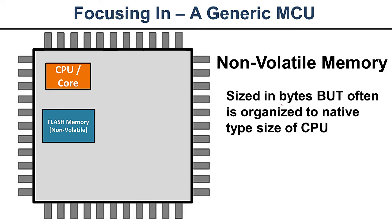When you look at microcontroller specs, flash is sized in 8-bit bytes, but internally it's organized to the native type size of the CPU. For example, a device might have 128 kilobytes of flash, but internally it's organized as 32 bits wide — so that's 32 kilowords for 128 kilobytes on a 32-bit processor. The reason is that when a CPU is grabbing instructions, it doesn't want to grab lots of little pieces — it wants to grab a big chunk of data at once.